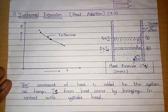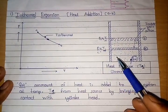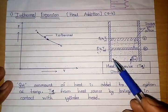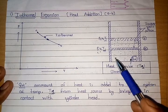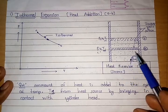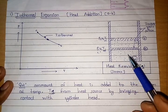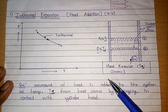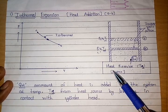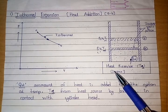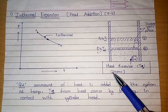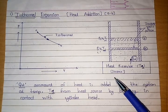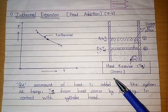In the Carnot cycle, a heat engine is used. The walls of the piston and cylinder are perfectly insulated using insulating material. Two heat reservoirs are used: the first is the hot reservoir which acts as a source, and the second is the cold reservoir which acts as a sink at low temperature.